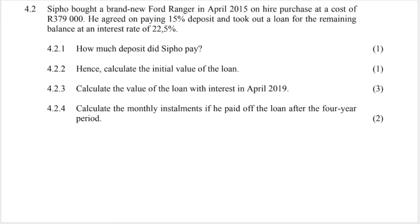My next question is a hire purchase question. Now remember hire purchase is a short-term loan and the interest paid on this loan is simple interest. So we need to use our simple interest formulae. Now remember with a hire purchase agreement usually a deposit is paid. So usually we have to work out that deposit first and take it off of the selling price of the car or in this case it's a car and it's the thing that we're purchasing. We have to take the deposit away first. So my first question let's read it. It says Sipho bought a brand new Ford Ranger in April 2015 on hire purchase at a cost of 379,000 rand. He agreed on paying 15% deposit. Remember that comes off first and then took out a loan on the balance.